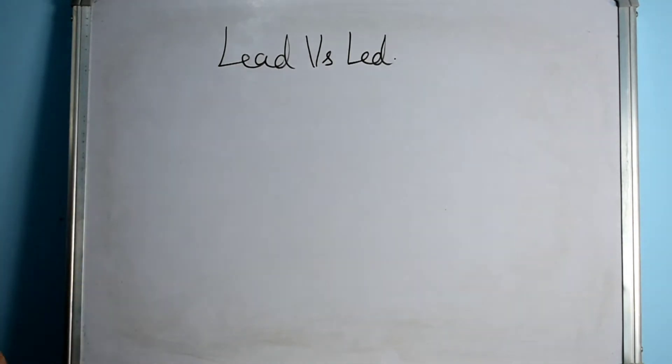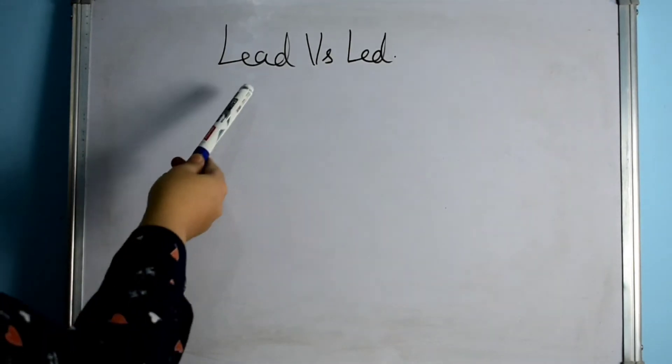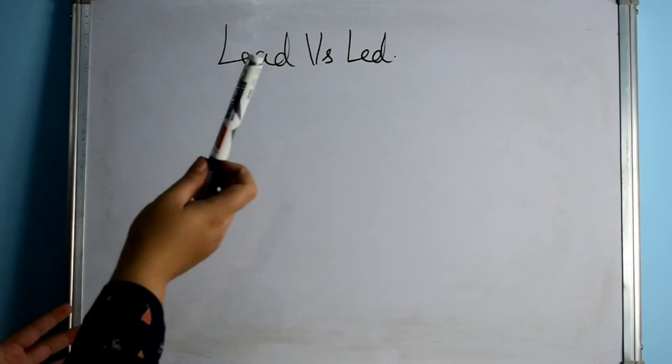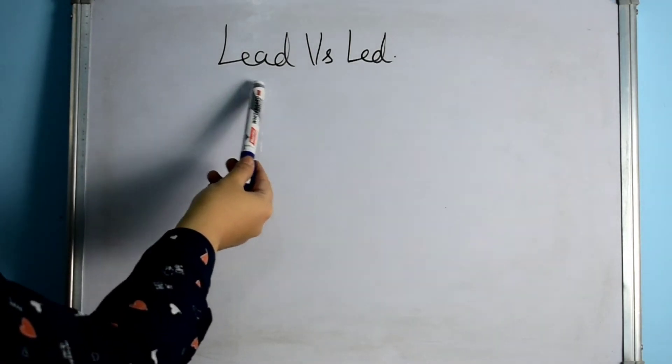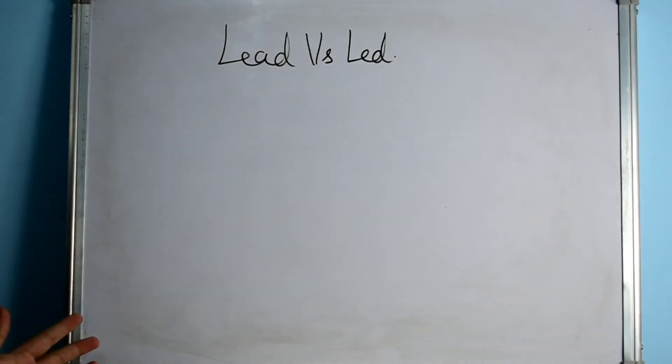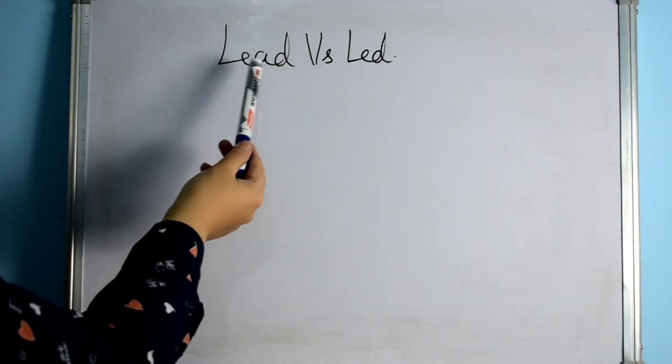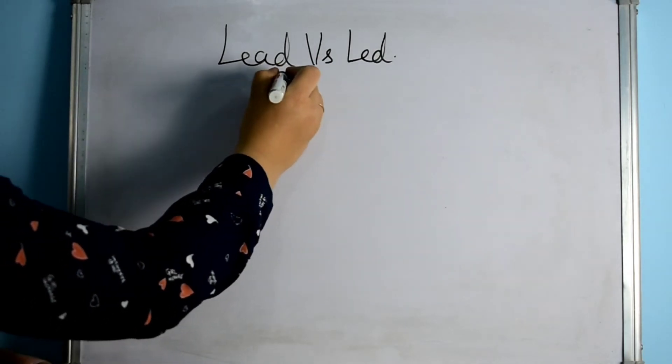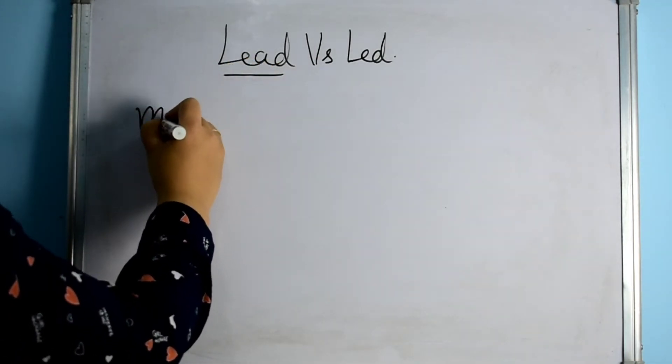Lead versus led. Why did I say lead versus lead? Because lead is a metal. So when we use this word as a metal, it is called lead. If I use this word as a verb, then it is called lead. And this is the cause of confusion.